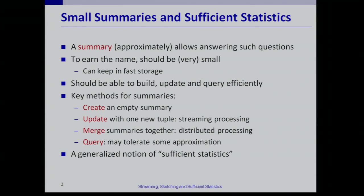Anything that allows us to do distribution and makes our lives easy enough that we don't have to worry too much about fine-grained synchronization and coordination across machines is going to help us work towards that goal. Obviously, to get any value out of this summary I have to be able to interrogate it — to pose some notion of a query. I sort of threw in the term 'sufficient statistics' to say that we can think of this as a generalization of that notion: what are the sufficient statistics for a broad range of computations that we can update as we see more draws from our distribution?